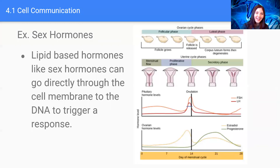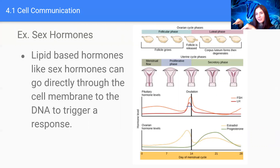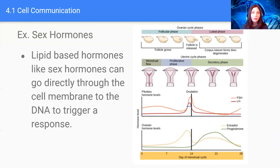Contrary to protein-based hormones, lipid-based or fat-based hormones are non-polar, meaning they do not carry a charge and can go straight through the plasma membrane into the cellular space itself. They do not dock with a receiving protein. Lipid-based hormones such as sex hormones can go directly through the plasma membrane to the DNA to trigger a specific response or protein to be produced — causing the DNA to instruct messenger RNA to carry the message to the ribosome to start making that protein.